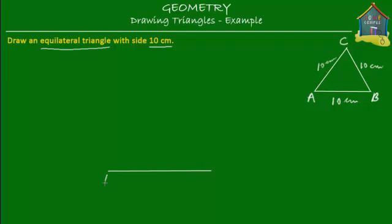Now this is A, this is B and AB is equal to 10 cm. Next what we have to do is draw this line AC and this line BC. How do I draw this line AC so that it's 10 cm?